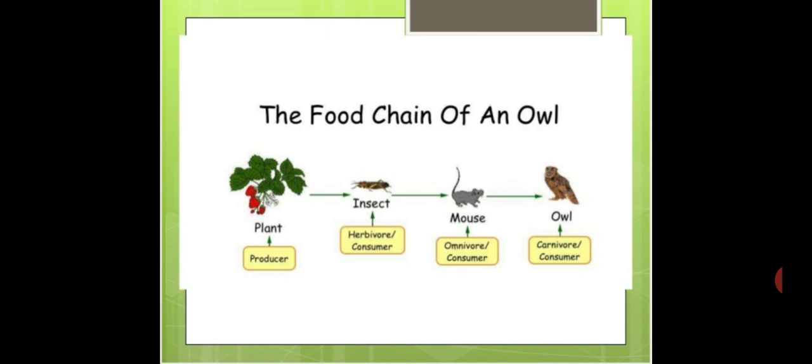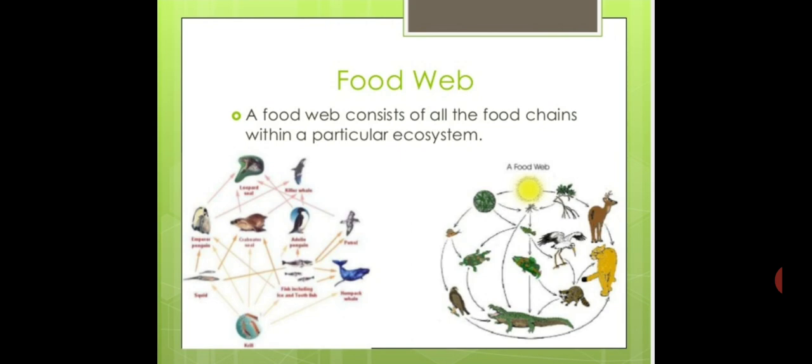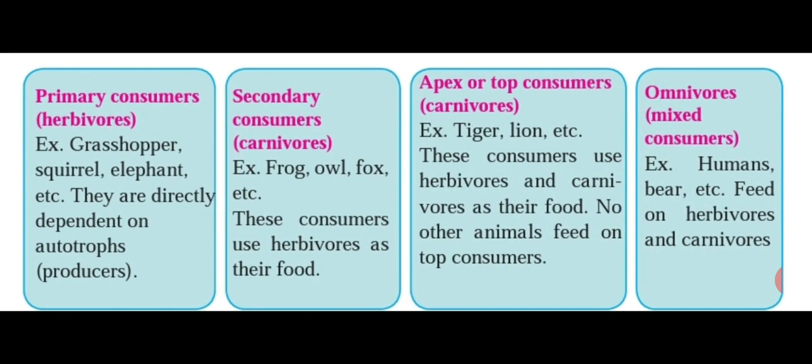When the owl dies, decomposers break down its body, nutrients go back to the soil, and plants grow in that soil — completing the whole food chain. Then there is another term called food web. A food web consists of all the food chains within a particular system. Different food chains are linked together, helping the flow of nutrients. You can see in the diagram how these food chains form a network called a food web.